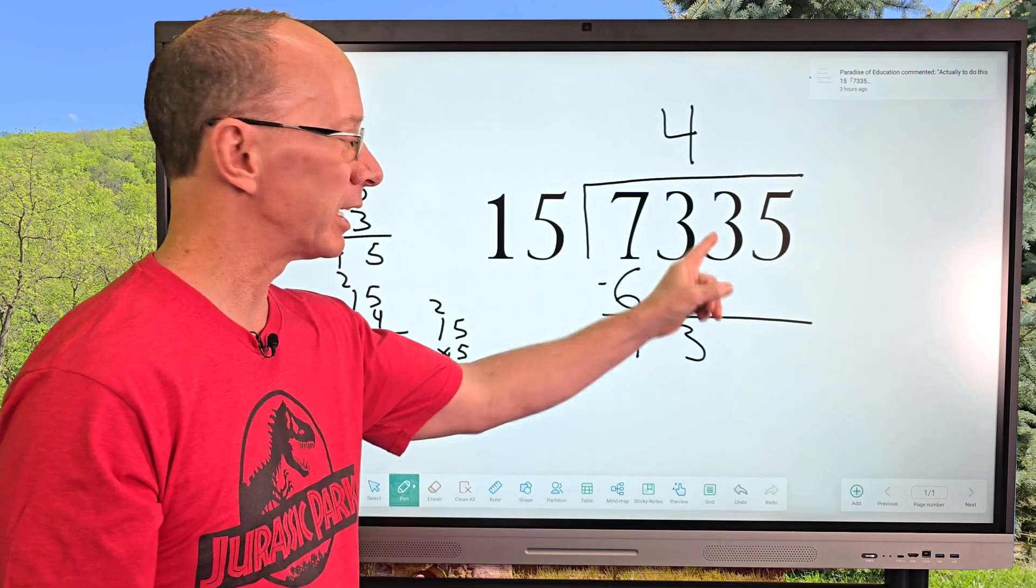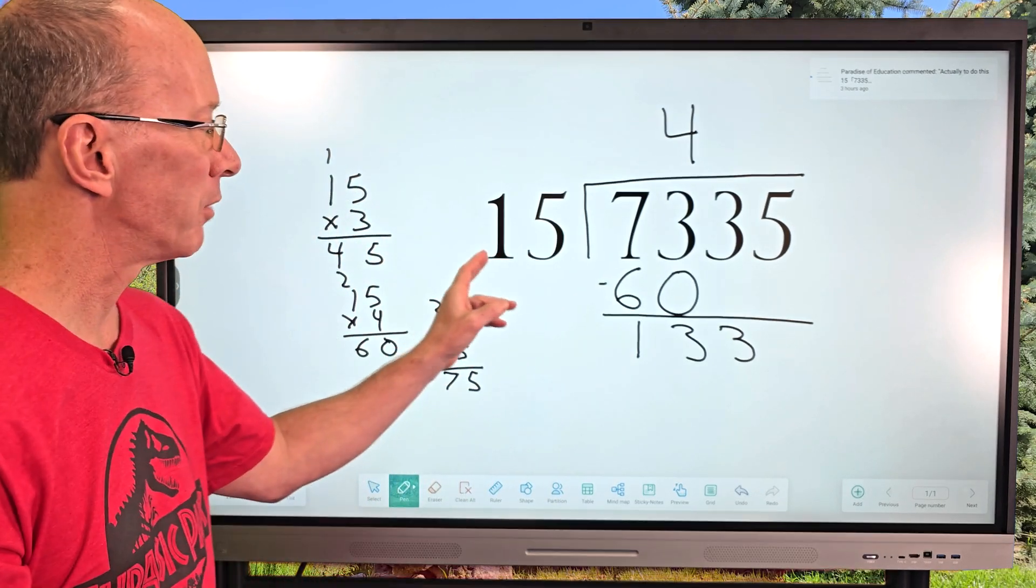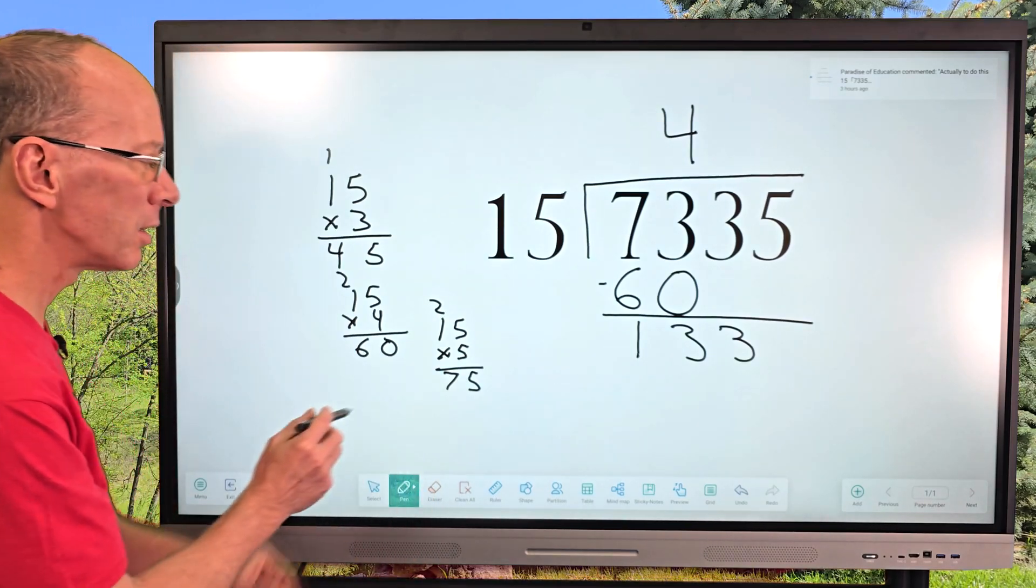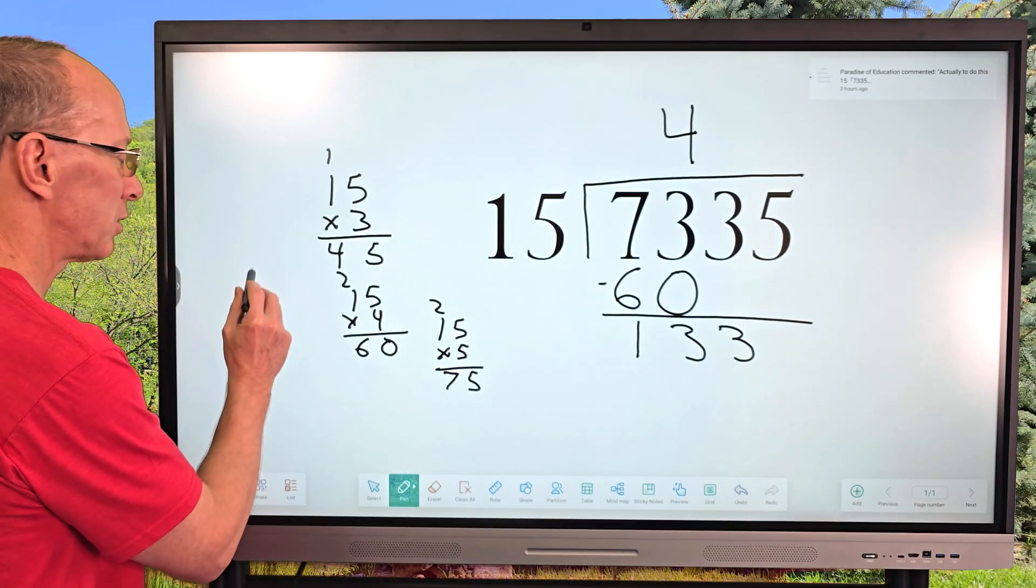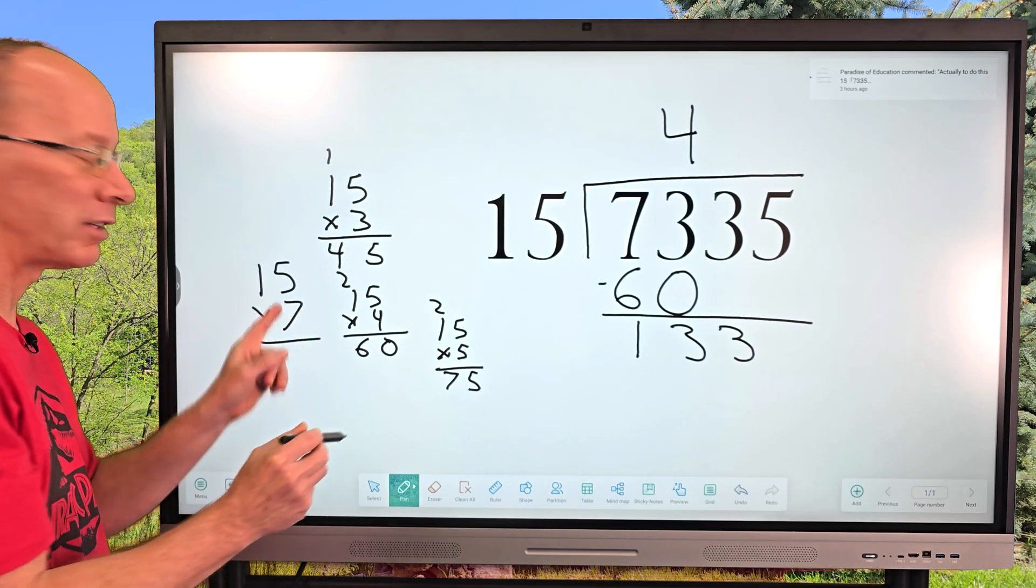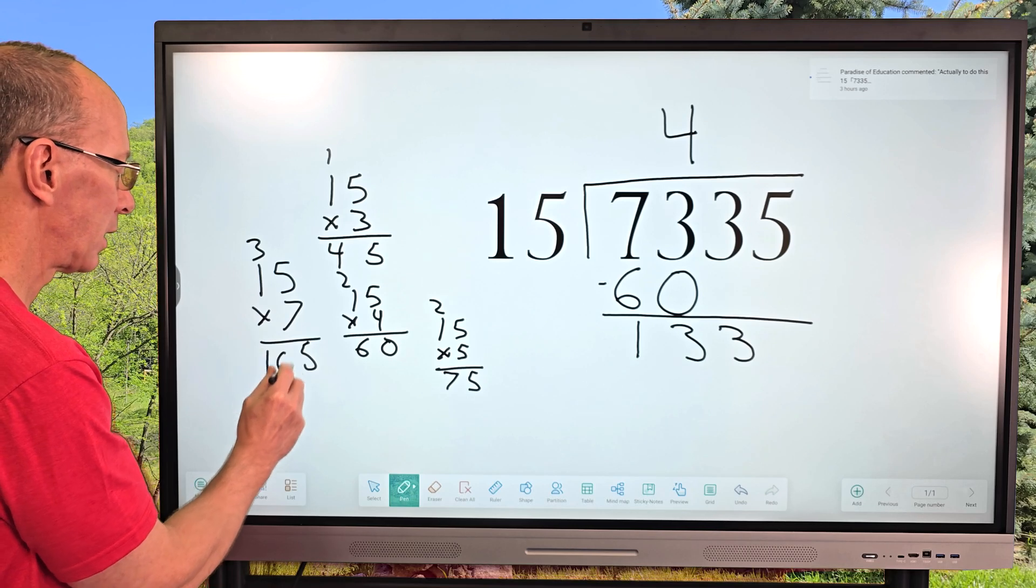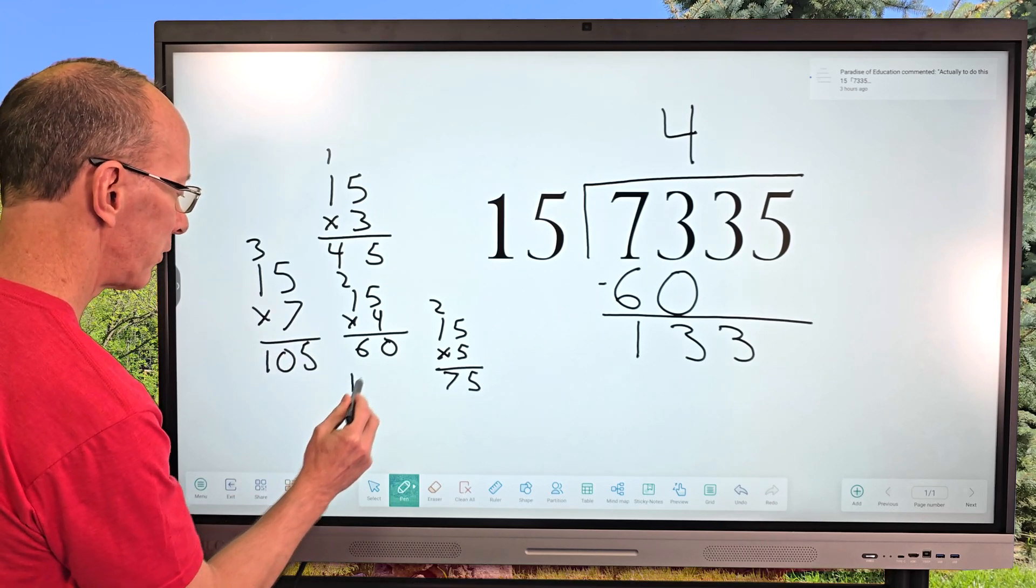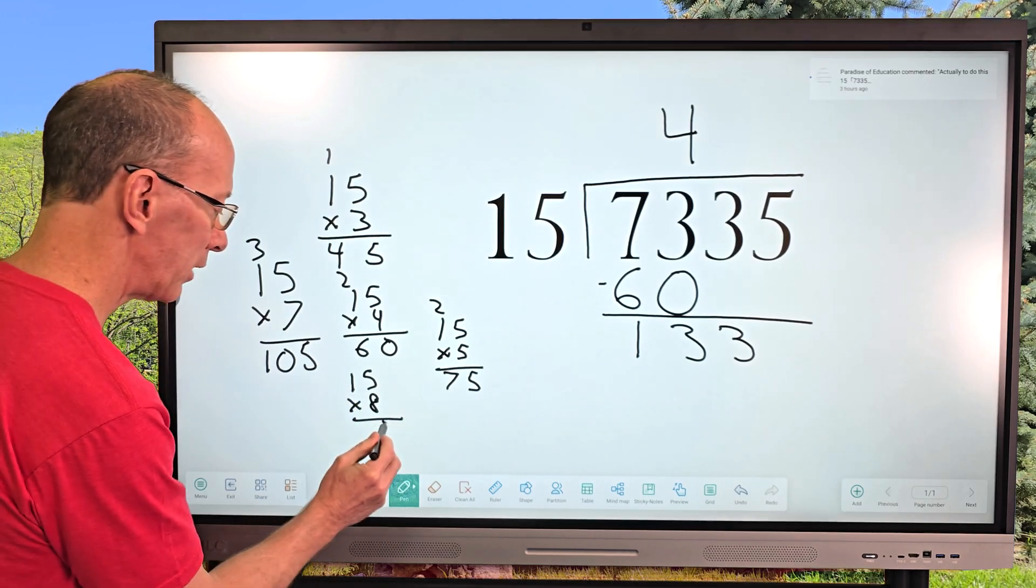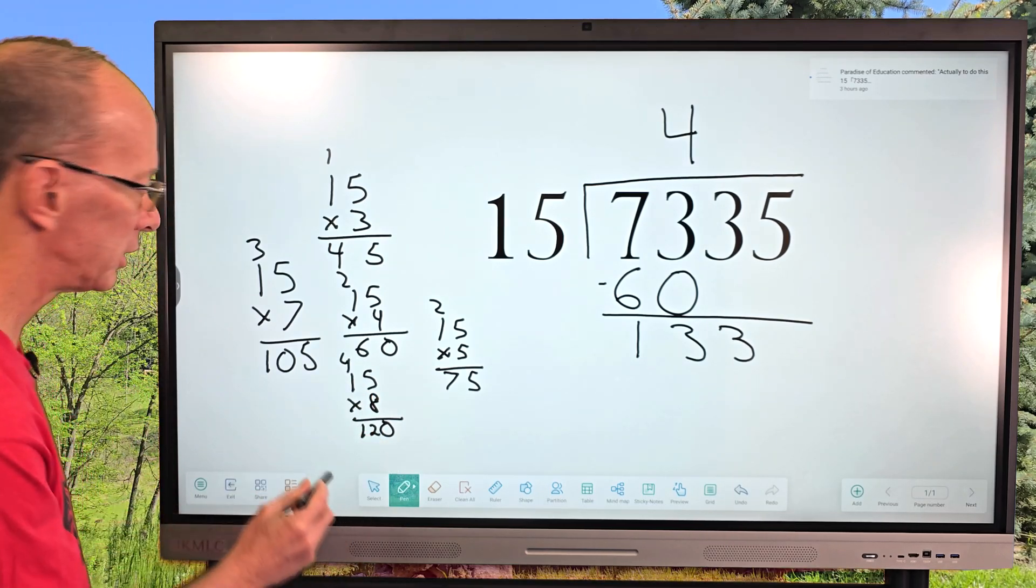So the next step is to drop the next number down, which would be 3. And now I'm going to try to figure out how many times can I put 15 into 133. 133 divided by 15. So I'm going to look, maybe we'll go with, let's try 7 here. So 15 times 7. So 5 times 7 would be 35. Carry the 3 up here. Then 7, 8, 9, 10. So we have 105. Let's try a little bit bigger. 15 times 8. So 8 times 5 is 40. Carry the 4 up here. Then 8, 9, 10, 11, 12.